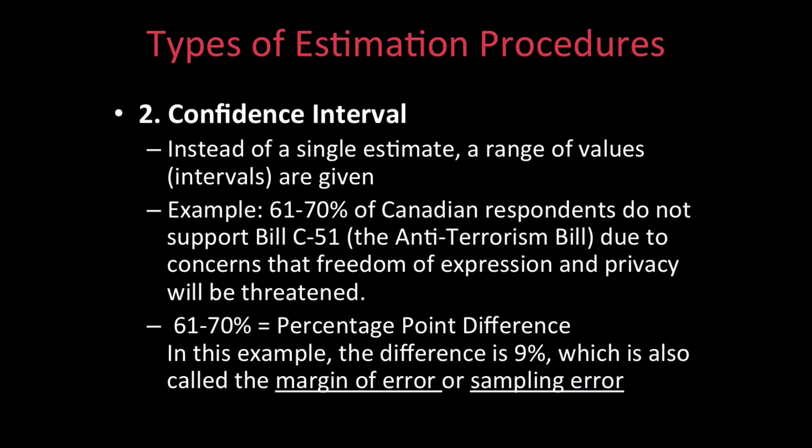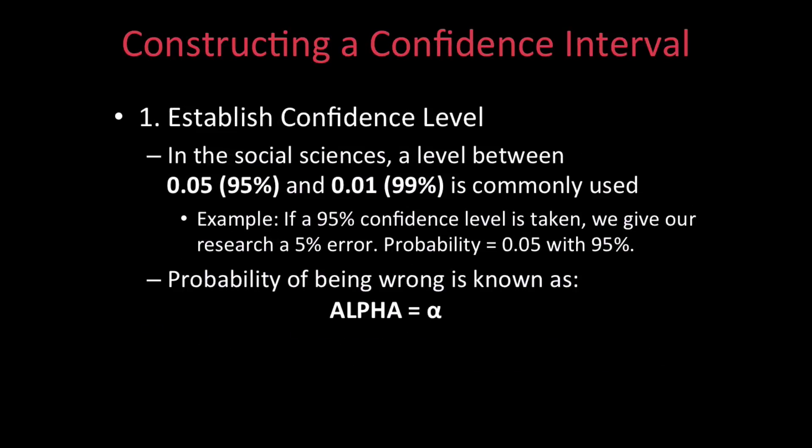Now let's figure out how to do a confidence interval. Firstly, we need to establish the confidence level. In order to do this, we find a middle ground between more or less confidence. In social sciences, a level between 0.05 or 95% and 0.01 or 99% are most commonly used.